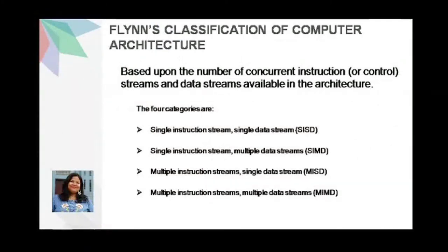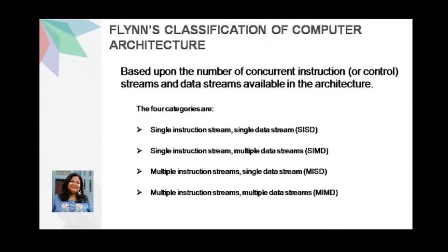Computer Architecture has been classified into four categories according to Flynn's Classification, which is based upon the number of concurrent instruction or control streams and data streams available in the architecture. The four categories are: Single Instruction Stream and Single Data Stream (SISD), Single Instruction Stream and Multiple Data Stream (SIMD), Multiple Instruction Streams but Single Data Stream (MISD), and Multiple Instruction Stream and Multiple Data Streams (MIMD).